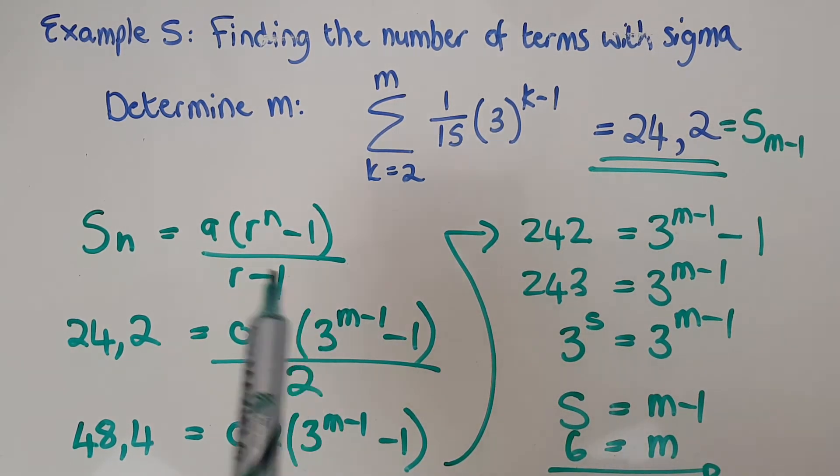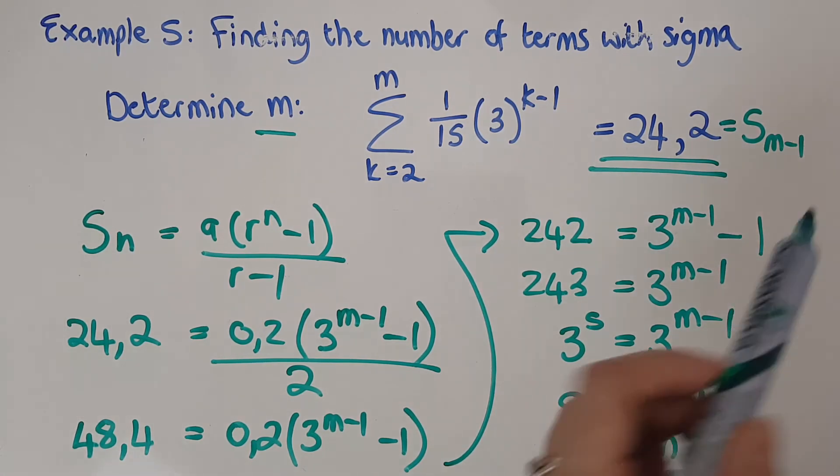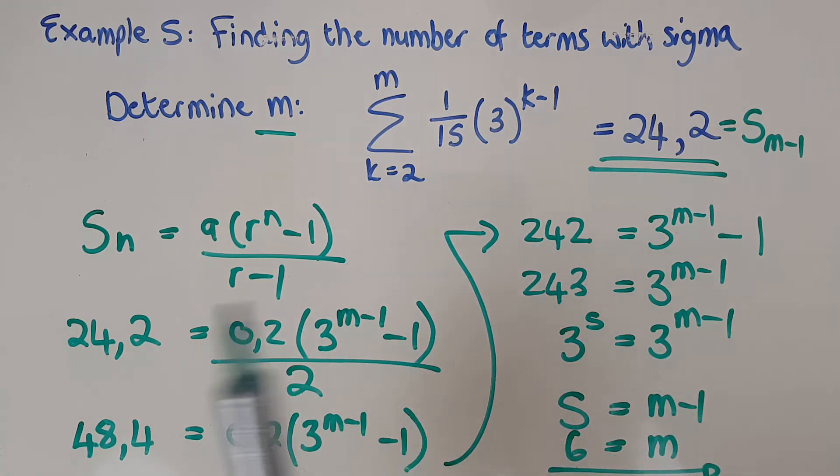Another question again. Determine m. I've got it. Just as an interest point, how many terms are there? Because the number of terms is actually m minus 1. So I've actually got 5 terms in this sequence. They didn't ask for that, but they could have. And I think it's interesting to just, in my head, plug it back and get that answer.